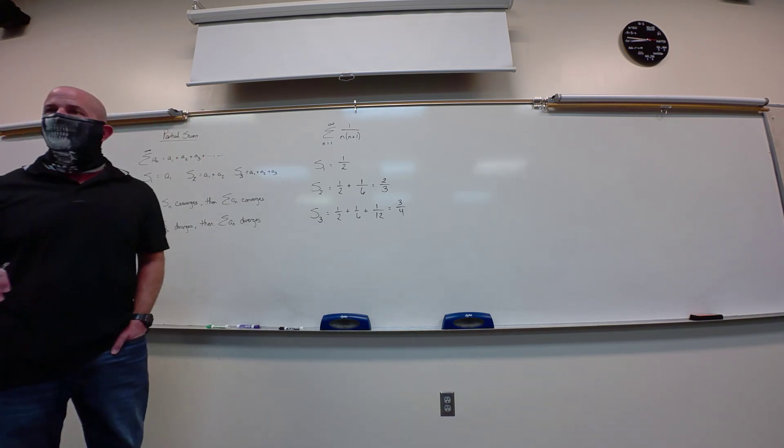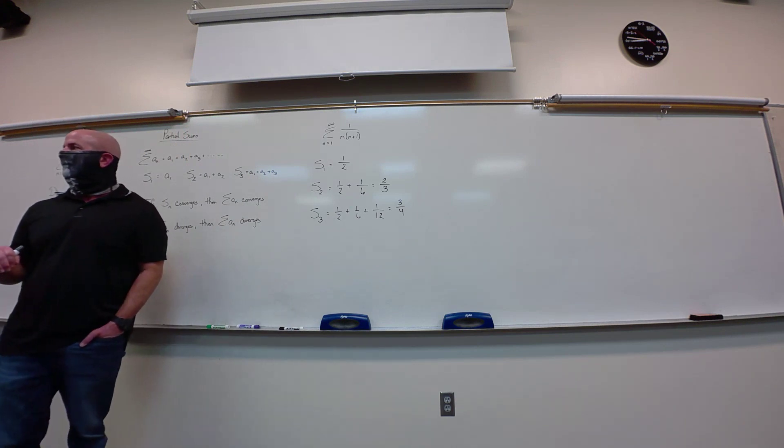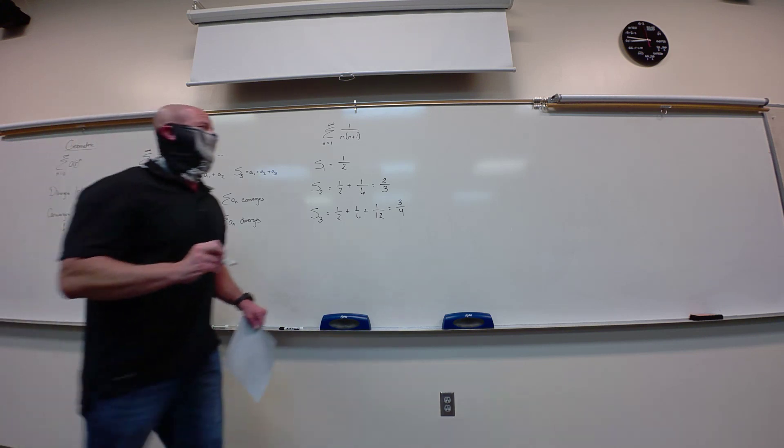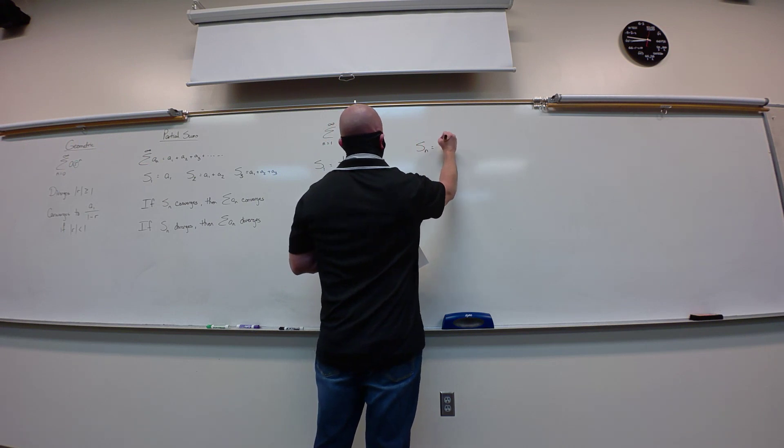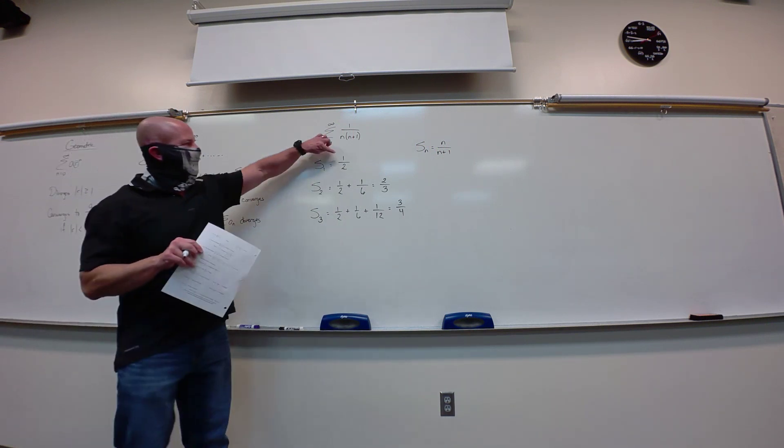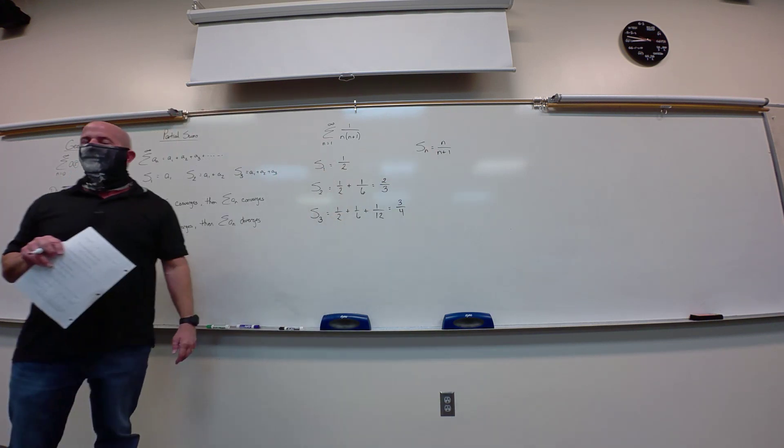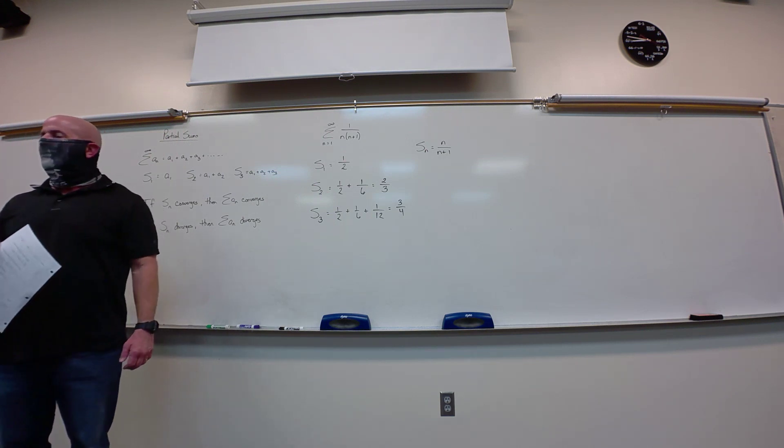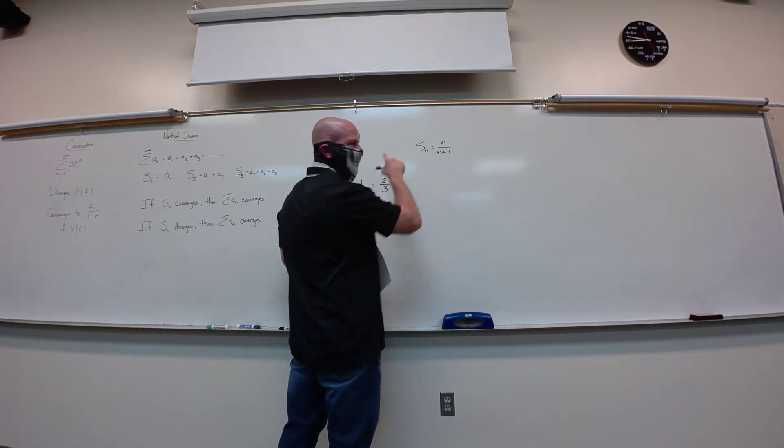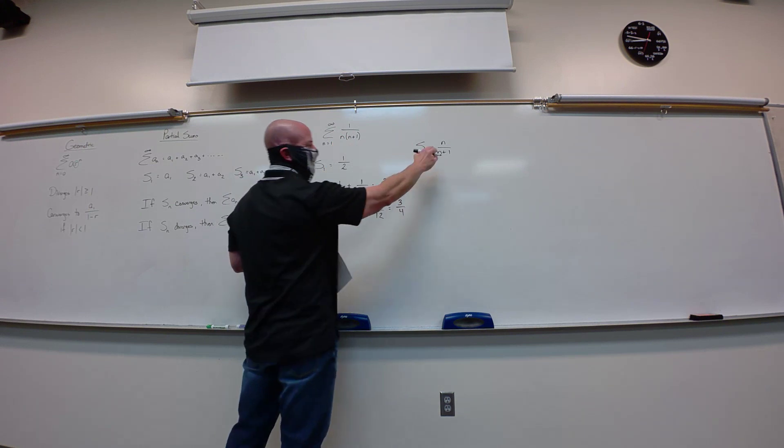Now, we're going to have a lot of different tests and ways to prove convergence and divergence, depending on what you're dealing with. Geometrics, the first one. Now, partial sums. If we're talking about a partial sum, so we have a sequence sum of, say, a sub n, a1 plus a2 plus a3, on down the line. Just infinite number of terms there. So again, we're going to infinity.